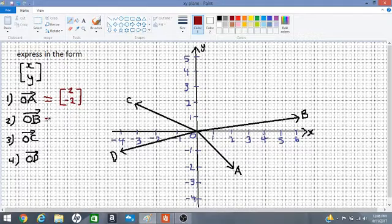Let's look at OB now. For OB, we're looking at the x-coordinate first, which is positive 6, and the y-coordinate, which is positive 1. So we put in these two entries in our column matrix. The number on top would be 6, the number underneath would be 1, and that represents OB.